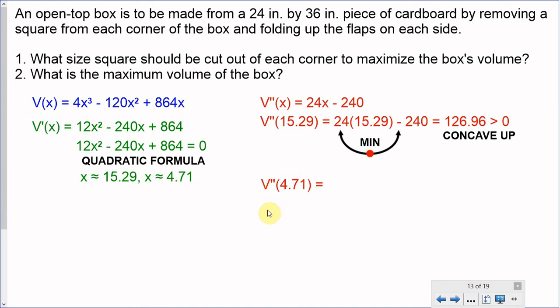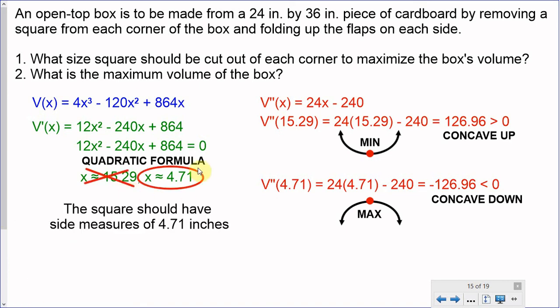Are we going to use 4.71? Let's plug that into the second derivative. And we see that we get -126.96. That is a negative number that is less than zero. When we get a number less than zero, that means that the area, the function in that area, is concave down. And this point of x equals 4.71 is a maximum at that x value. So I'm going to reject 15.29 because that would minimize the box's volume. That's not what I want to do. And I am going to accept 4.71. That is going to help maximize the box's volume.